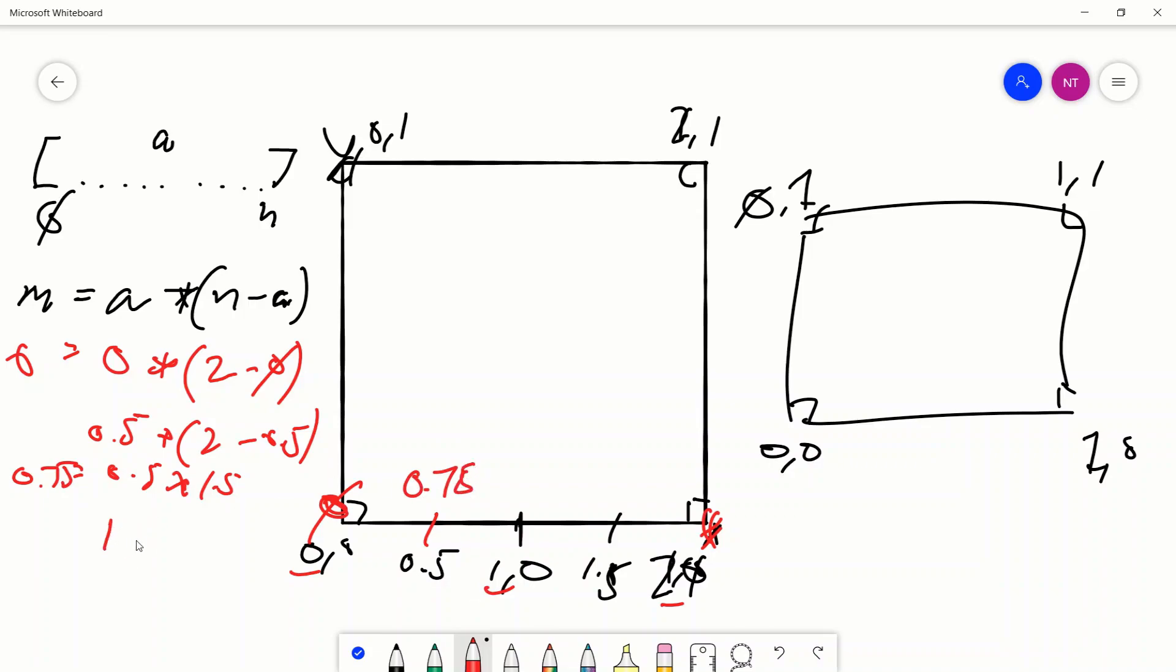How about one? What is one times two minus one? Two minus one is one. One times one is one. This is our mirror. That's the mirror value. The middle value is always just going to be n, the max, divided by two squared. How about 1.5? What is 1.5 times two minus 1.5? Well, that's the equivalent of 1.5 times 0.5. But hold up. Isn't 1.5 times 0.5 the exact same as 0.5 times 1.5? Well, yes, it is. So we have a 0.75 for this guy. So this is where the mirror effect comes in.